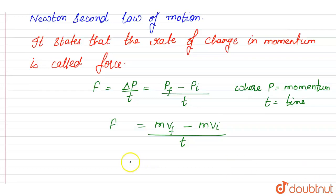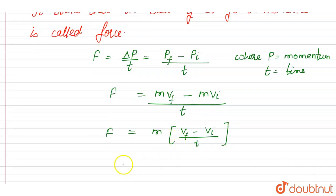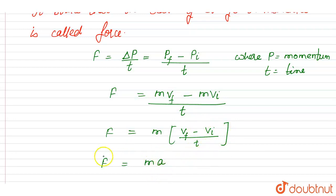Now, taking m as common, this becomes m into (v final minus v initial) divided by time t, which equals force. That is, change in velocity per unit time. And we know that change in velocity per unit time is equal to acceleration, a. So, force is equal to m into a.